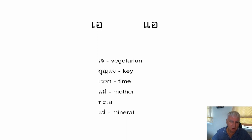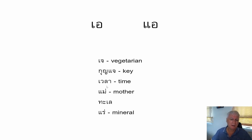The second word is 'gun-J.' It has Sara A, and this consonant is called Yo Ying — as a final consonant it makes an N sound, giving 'gun.' The second syllable has the air vowel again followed by Jo-Jan, making a J sound, so 'gun-J,' which means key in Thai. The next word has Sara A and the consonant Wo Waen as the first syllable giving 'way,' then the lower Ling L consonant with the long R vowel for the second syllable — meaning time.